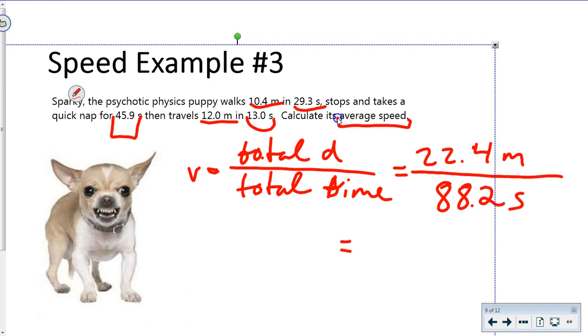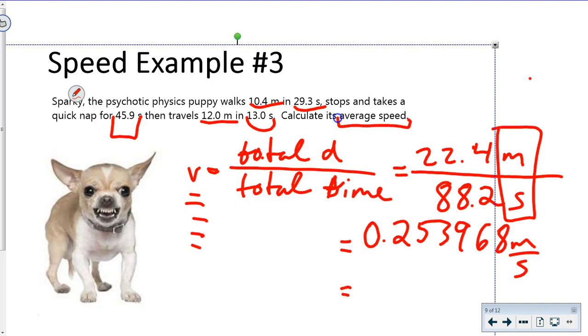We calculate: 22.4 meters divided by 88.2 seconds gives us 0.253968. What about units? Nothing cancelled, so it's meters per second—a unit of speed. We're okay here. Looking at significant digits, we've got three everywhere, so our answer is 0.254 meters per second.